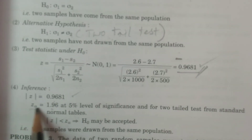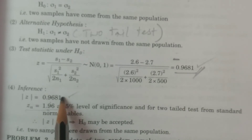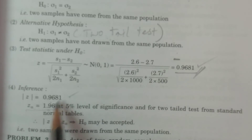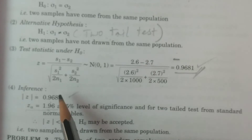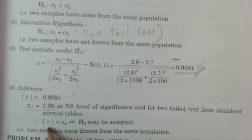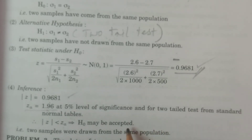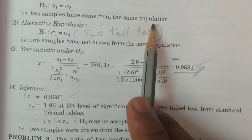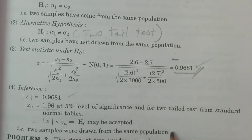The critical value is Z alpha equals 1.96. Comparing: modulus of Z equals 0.9681, and Z alpha equals 1.96. Since 0.9681 is less than 1.96, modulus of Z is less than Z alpha. Therefore H0 is accepted. Two samples have come from the same population. Therefore, the two samples were drawn from the same population — conclusion.